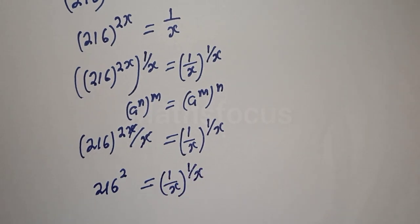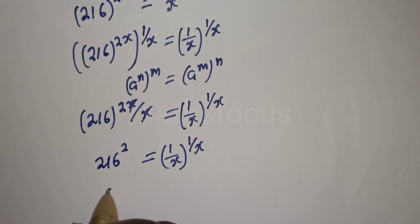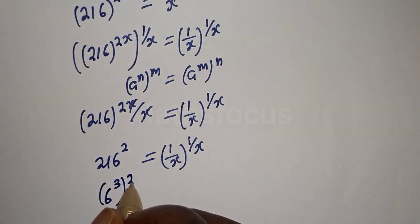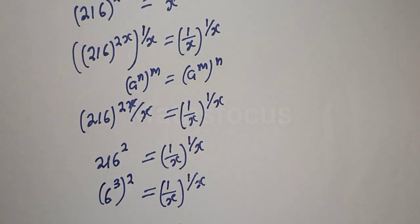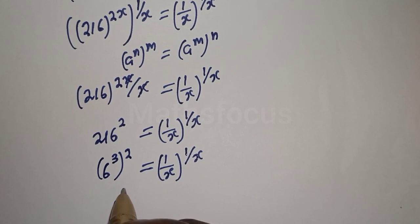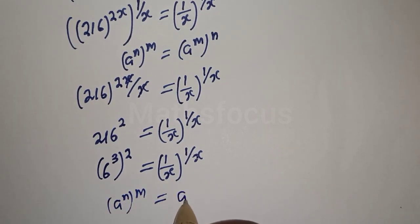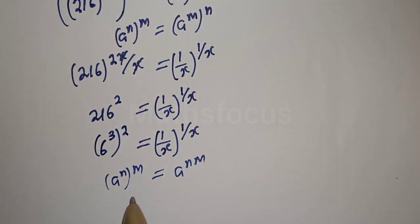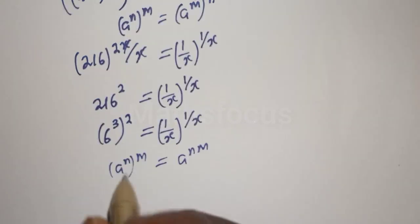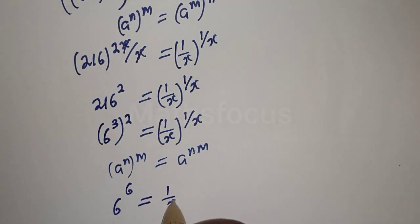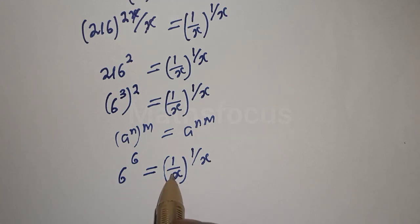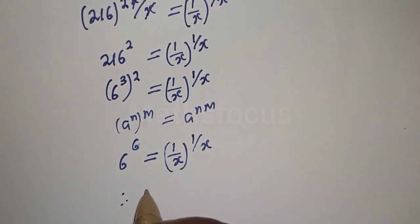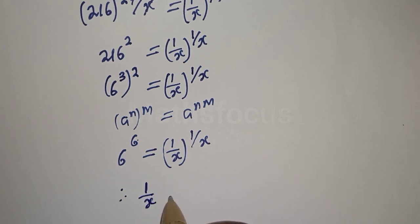So 216 squared equals one over x to the power of one over x. Now, 216 is 6 cubed, so 6 raised to power 3 squared equals one over x to the power of one over x. Using the rule a raised to n times m, this becomes 6 raised to power 3 times 2, which is 6 raised to the 6th, equal to one over x to the power of one over x. We can see the base equals one over x, which is 6, and the exponent 6 equals one over x.